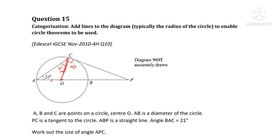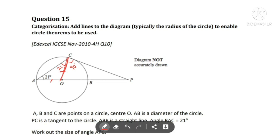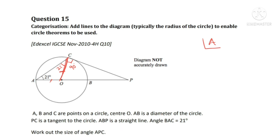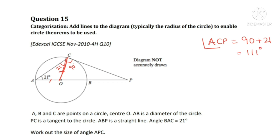These two angles are equal because they are radii. OC is also the radius of the circle. So angle ACP is equal to 90 plus 21, which is 111 degrees.